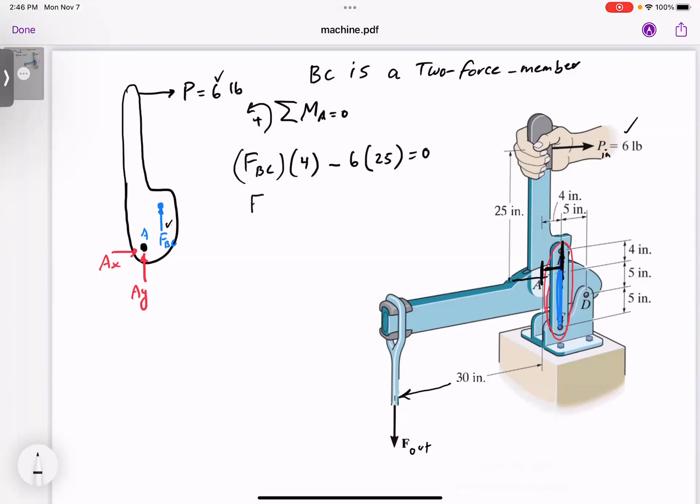If you solve for FBC you end up getting 37.5 pounds. I started with the right assumption. Imagine if I had FBC the other way around, I would have ended up getting a negative answer and I would have assumed it's in tension. You cannot go wrong, you can pick any direction you want, but now we know it's the correct direction.